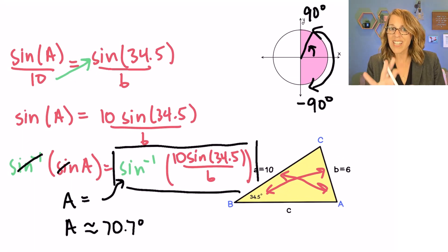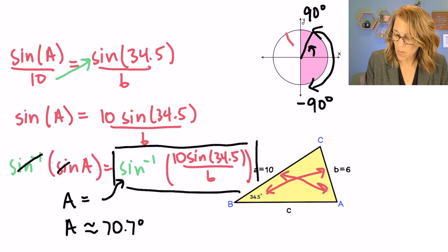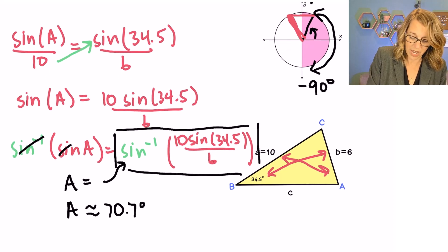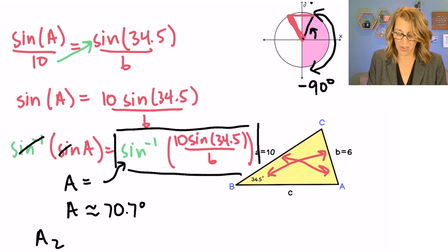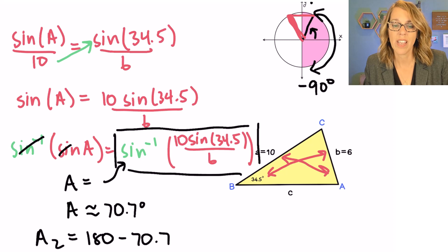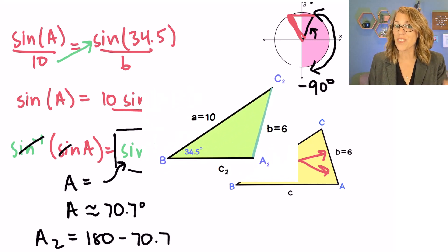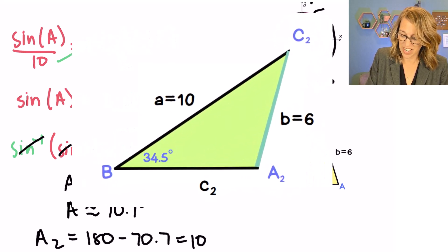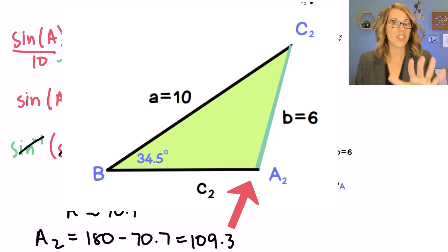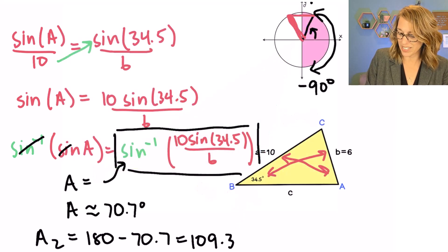There's a second value with the same sine value, and to find it for A-sub-2 (our second triangle) I take 180 minus 70.7 degrees. That gives us the obtuse angle of 109.3 degrees for triangle number two. I'm going to hang on to that 109.3 for triangle two, and finish up triangle one with the 70.7 degrees. So this angle right here is 70.7 degrees.